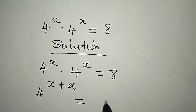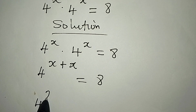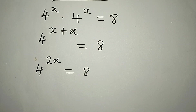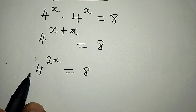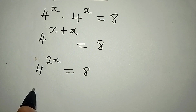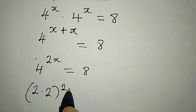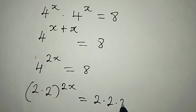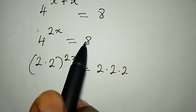So this will now be equal to 8, meaning that 4 to the power of 2x is equal to 8. Our next target is to make sure we have the same base. Now, 4 here is 2 multiplied by 2, and this is to the power of 2, and it's equal to 2 multiplied by 2 multiplied by 2, because this will give us 8.